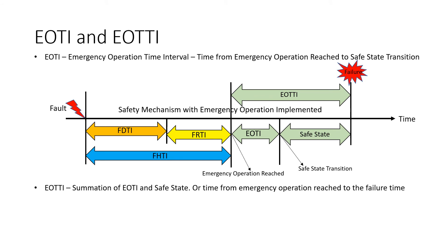EOTI and EOTTI. Till now we have covered scenarios without a safety mechanism and with a safety mechanism. Here is the pictorial representation. A safety mechanism is there with emergency operation implemented. EOTI — Emergency Operation Time Interval — is the time interval from when emergency operation is reached to the safe state transition. EOTTI is the summation of EOTI and the safe state together, or the time from emergency operation reached to the failure time.